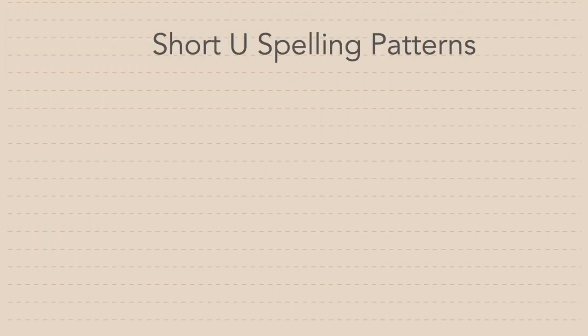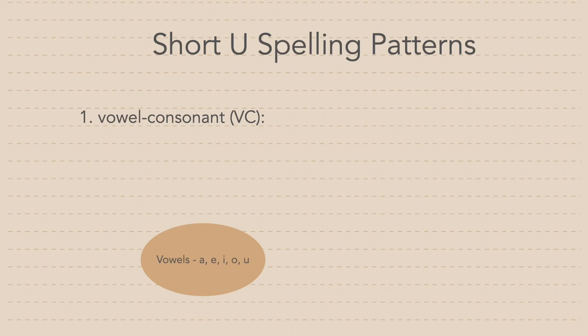Learning spelling patterns can help with your pronunciation. Short U has two spelling patterns. The first is vowel consonant, V-C. Vowels are the letters A, E, I, O, and U. Consonants are everything else.